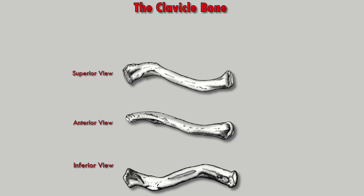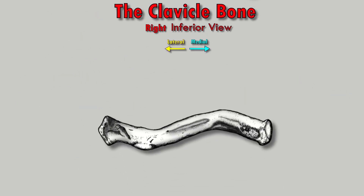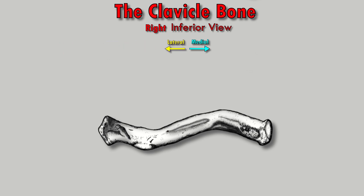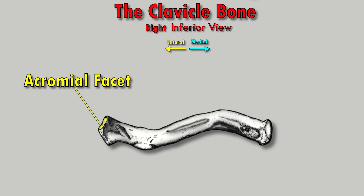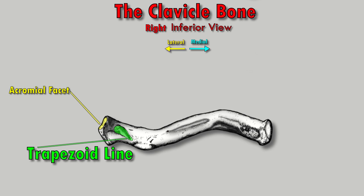Now let's look at the undercarriage of the clavicle bone from an inferior view, starting on the lateral end — the acromial end — and working our way medially. On the acromial end we have the acromial facet, which articulates with the acromion of the scapula and makes up the acromioclavicular joint. Then we move on to the first bony landmark: the trapezoid line, which provides an attachment site for the trapezoid ligament.